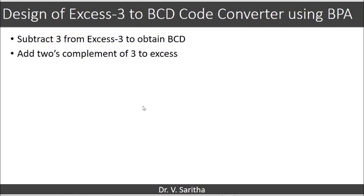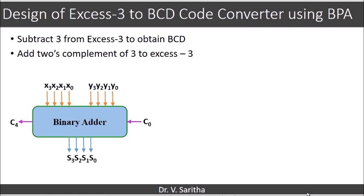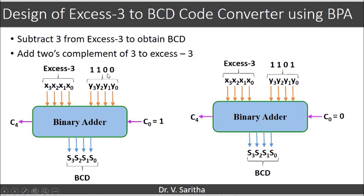For the reverse — designing an XS3 to BCD code converter — we subtract 3 from XS3 to obtain BCD, which is equivalent to adding the 2's complement of 3 (i.e., adding −3) to XS3. Using the binary parallel adder, we feed XS3 as X and the 2's complement of 3 as Y to obtain BCD. Alternatively, we can combine the constant as 13 at input Y with input carry C=0 to achieve the same result.